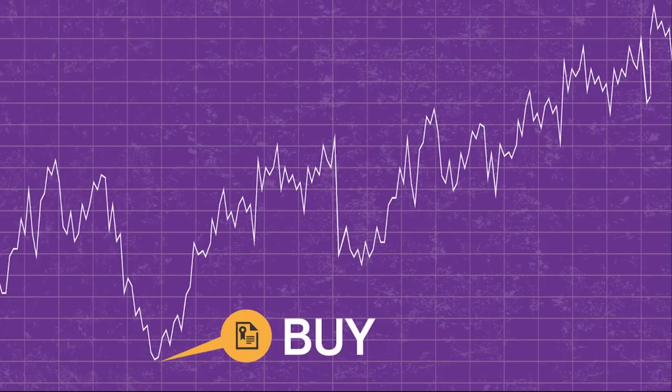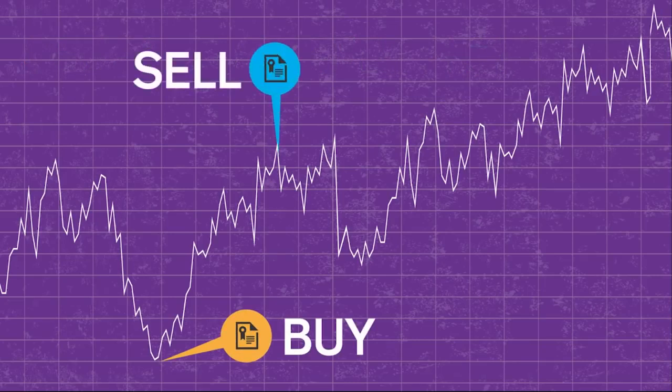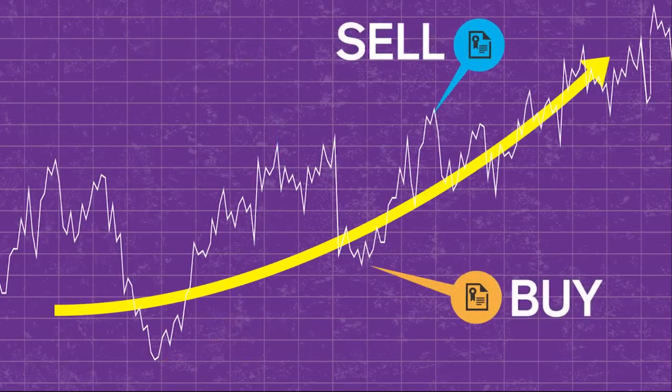When one investment type is down, you want to buy. At the same time, you want to sell an investment that is high. In the long run, they all tend to move up, just at different rates based on risk.